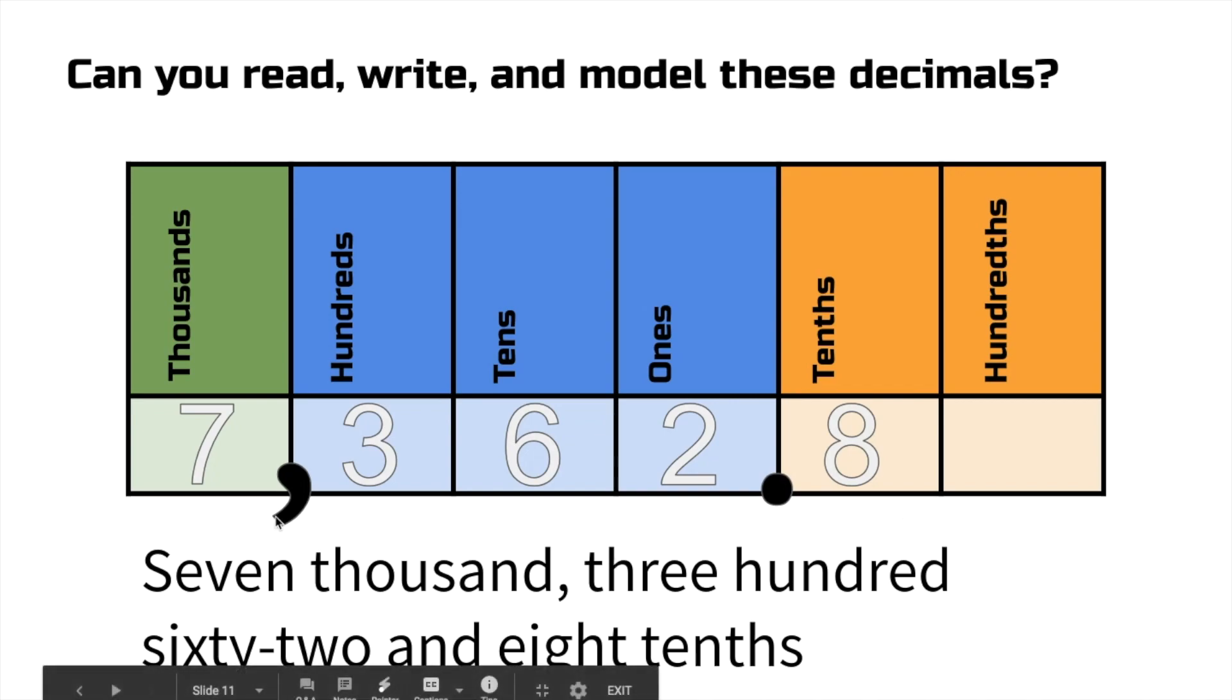It's not as bad as you might think. Just read the number like normal. Say and when you get to the decimal point and then read the number and say the place of the last digit. So if it's in the tenths place, eight tenths. If this was in the hundredths place, say eight hundredths. All right. I think we got it.